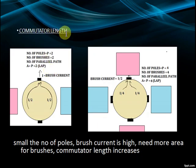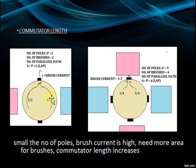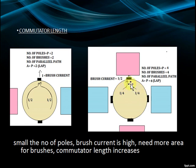Commutator Length: A 2-pole machine has 2 brushes. For a lap winding, number of parallel paths equals number of poles, which is 2 here. So current I divides through the paths as I/2, and brush current is I/2 + I/2 = I. For a 4-pole machine with 4 brushes, current divides as I/4 per path, so brush current is I/4 + I/4 = I/2. With fewer poles, brush current is higher, requiring more brush area, and commutator length increases.